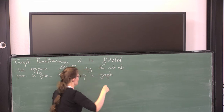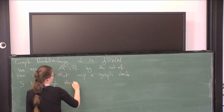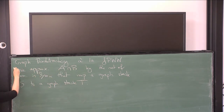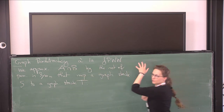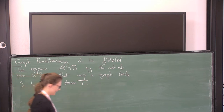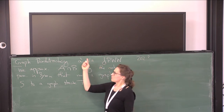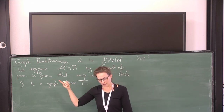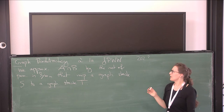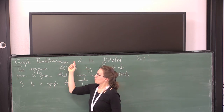Instead of approximating A∩B by the stabilizer of a partition and then refining, we now approximate A∩B by the set of permutations in S_n that map a graph stack S to a graph stack T. There are papers and packages for this. There's the original graph backtracking paper named in reference to Leon's paper — it's on the arXiv, around 2021 — a really big paper where we explain the whole idea and setup.